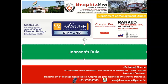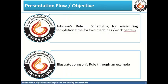Welcome to this session. Today we are going to learn about Johnson's Rule, which is a rule used in scheduling. It is aimed at minimizing the completion time, and there are two machines or two work centers involved in the processing of jobs.